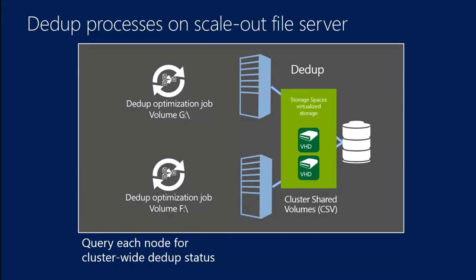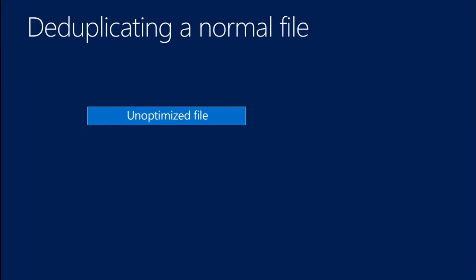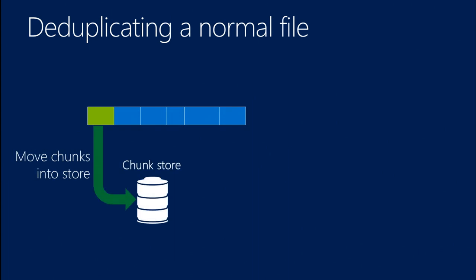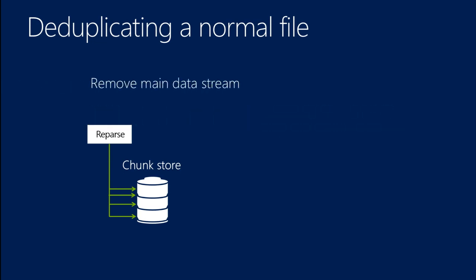Let's talk under the covers about open files. Starting with a normal file that's not open: you start with an unoptimized file — a stream of bits on disk. We split it into variable-sized chunks using the algorithm we talked about. Then those chunks get moved into the chunk store. Once in the chunk store, we create a reparse point in the file system that points to the location of those chunks. Then we remove the main data stream, and all that's left is the reparse point.